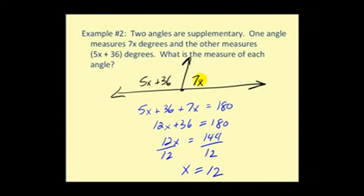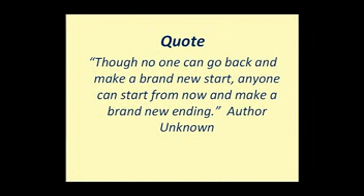7 times 12 would give us 84 degrees here. And then when I replace x with 12 here, 5 times 12 plus 36 would be 96 degrees. I hope you found this video helpful. Thank you for watching.